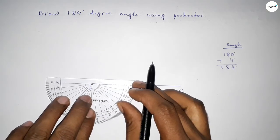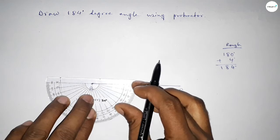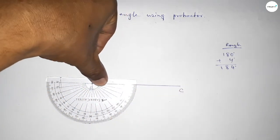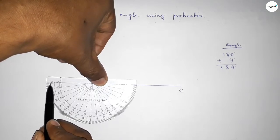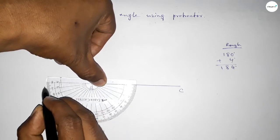Again, putting the protractor on point B, by this way, on point B perfectly. Then we have to count extra 4-degree angle. So this is 180 degrees, and this is 1, 2, 3, 4. By adding extra 4-degree angle with 180 degrees...